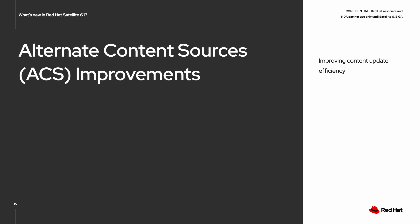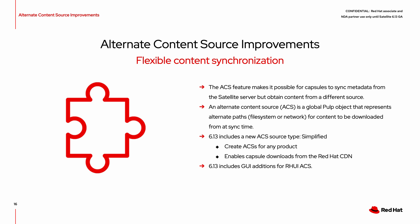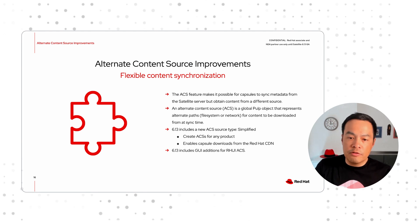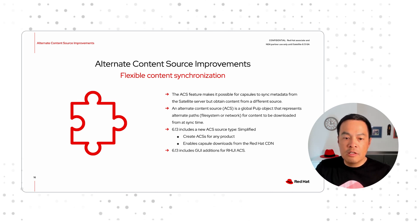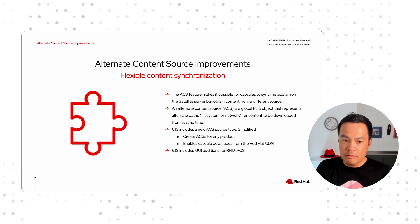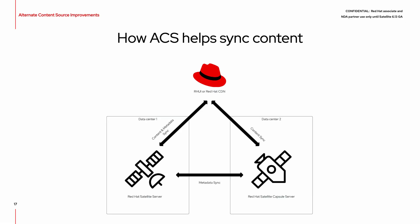We have also improved the Alternate Content Sources feature in 6.13. Satellite 6.13 makes it easier to synchronize from Alternate Content Sources, or ACSs. ACSs are used to make more efficient use of bandwidth when synchronizing content. There are two new improvements to ACS in Satellite 6.13: the addition of Web GUI functionality to setting up synchronization with Red Hat Update Infrastructure sources, and the addition of a new source type known as simplified. A simplified ACS source can be created for any content product.